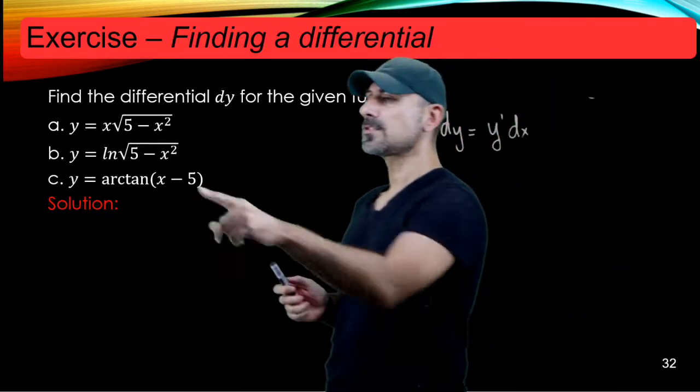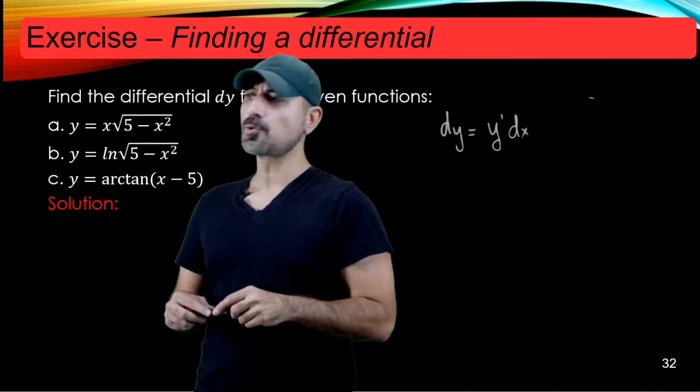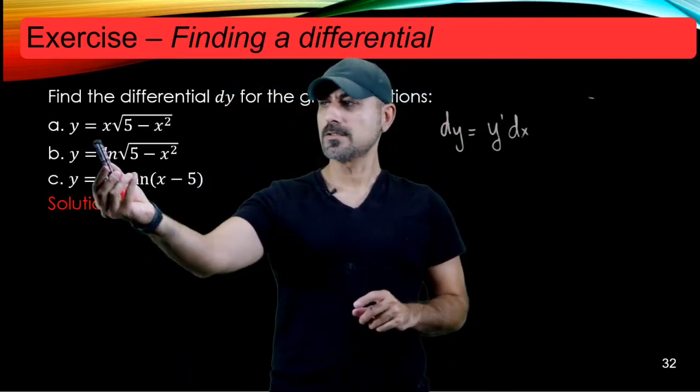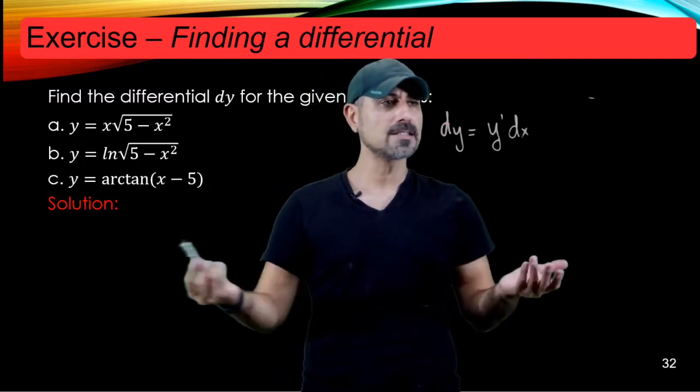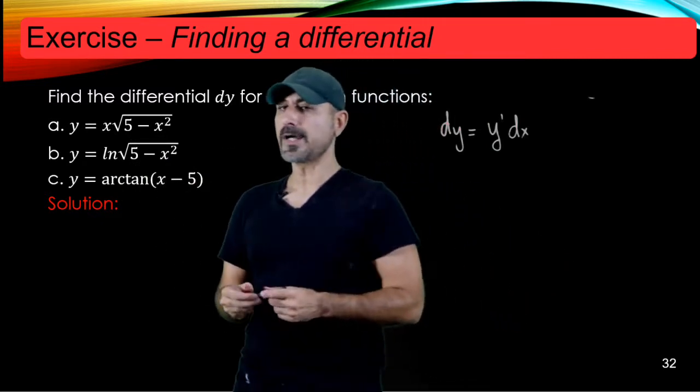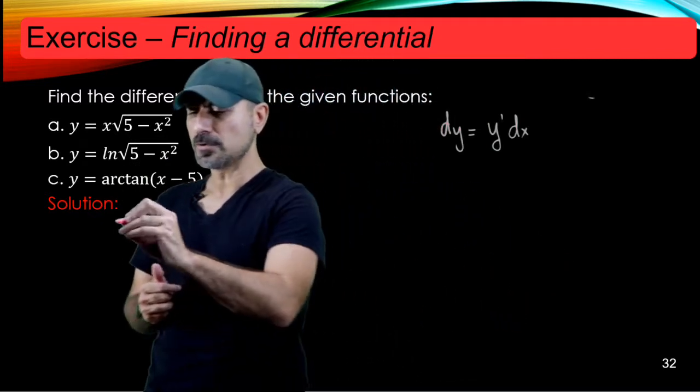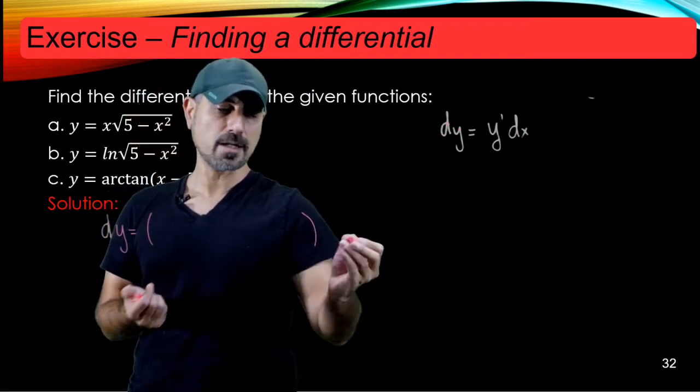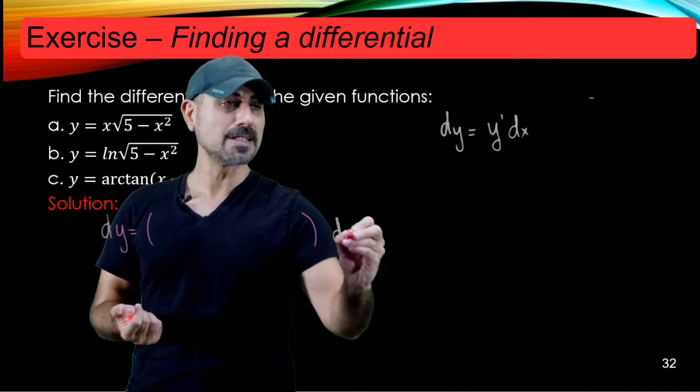So here we go. We have y to be equal to x times square root of 5 minus x squared. Well this is the product of two functions, x and radical 5 minus x squared. So why don't we use the product rule to come up with the y prime and obviously we're going to multiply this by dx.